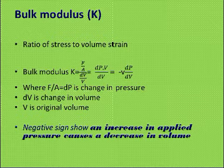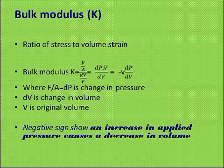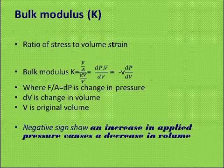We can replace F by A with DP, giving DP upon DV into V. When the pressure is increased, the volume decreases, so we indicate a negative sign. This negative sign indicates that an increase in the applied pressure causes a decrease in the volume, and if pressure is decreased, then the volume will increase. Hence the negative sign for volume in the formula.